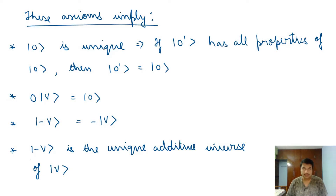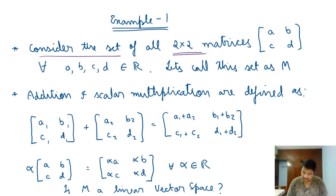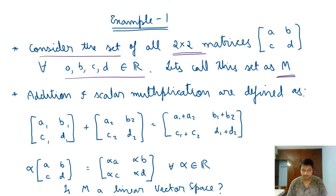Let us begin with the first example. We consider the set of all 2×2 matrices whose elements are a, b, c, d, for all a, b, c, d belonging to the real numbers. Let us call this set M.